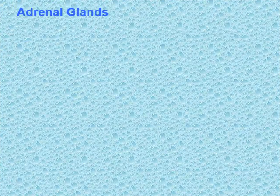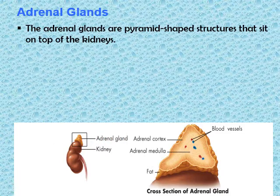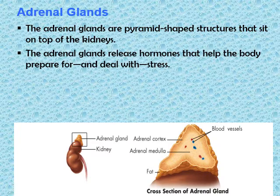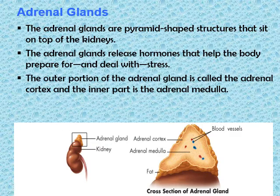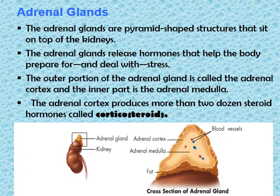The adrenal glands are pyramid-shaped structures that sit on top of each kidney. They release hormones that help the body prepare for and deal with stress. The outer portion is called the adrenal cortex and the inner part is called the adrenal medulla. The adrenal cortex produces two dozen steroid hormones called corticosteroids.